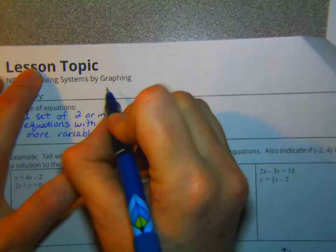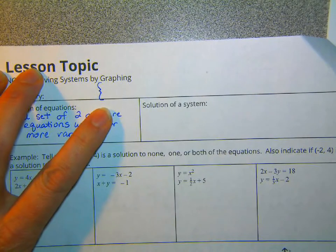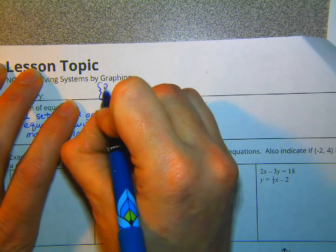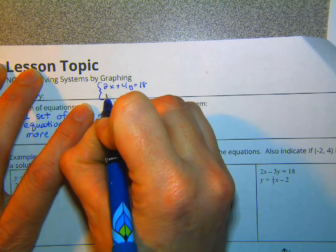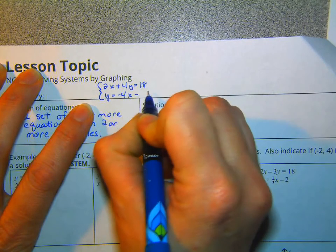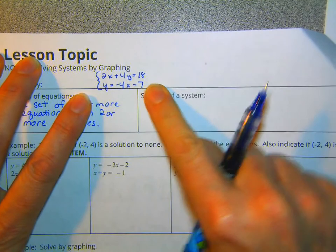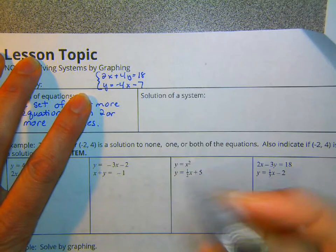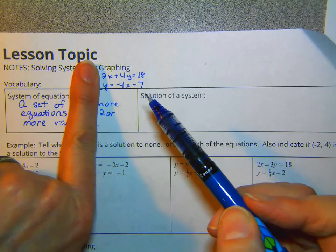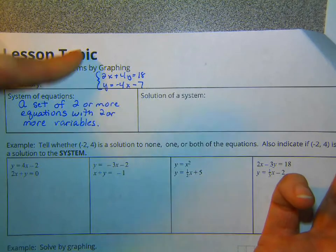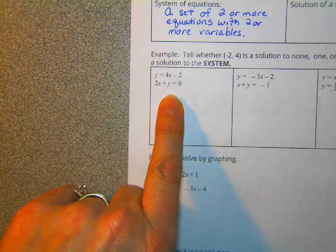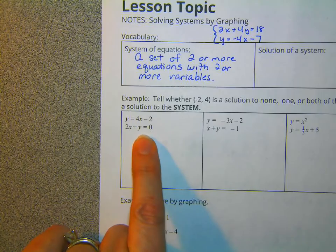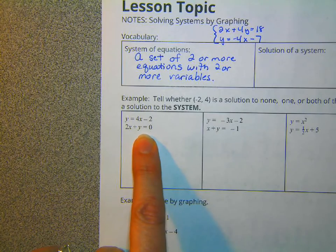They look like this. Typically, they've got the curly brackets there, and they'll look like 2x plus 4y equals 18, or y equals negative 4x minus 7. Just two equations, two variables. A lot of the time, you will see them without the curly bracket. But if you see the curly bracket, it just means these things go together. Mostly in this case, it's because I couldn't figure out how to get the curly bracket on there in the right way.